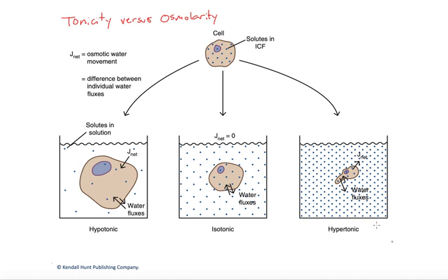If we take a cell and drop it into three different solutions — note the dots here, where the density of the dots indicates the concentration of the solutions — let's follow the middle one first. We drop the cell into a solution of similar concentration outside as inside. The term tonicity is comparative, and in this case we say it's isotonic: the cell and the solution are isotonic.